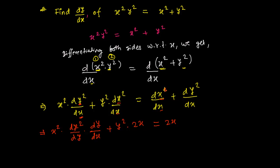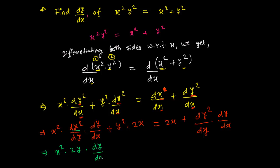On the right-hand side, derivative of x² gives 2x, and for y² we again apply the chain rule: derivative of y² with respect to y is 2y, times dy/dx. So after differentiating both sides we get: x²·(2y·dy/dx) + y²·(2x) = 2x + 2y·dy/dx.